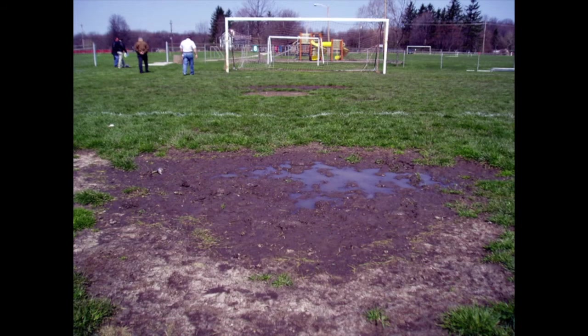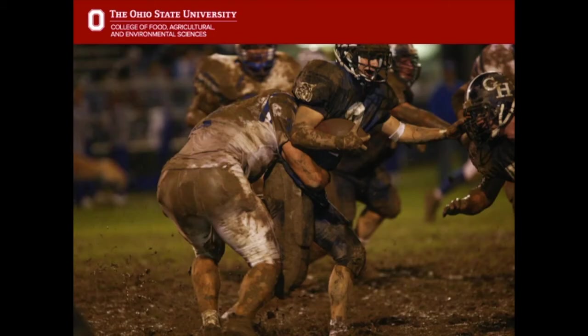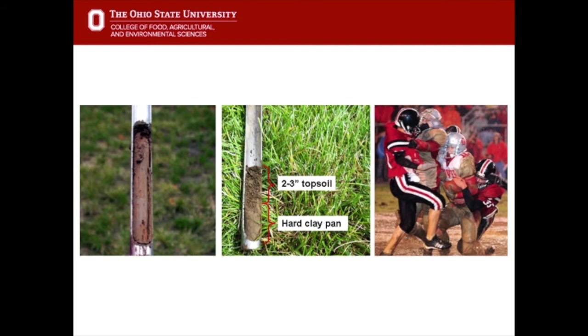In an extreme situation, if we have rain during a game, this type of scenario can happen. This is what native soil fields look like — the native soil can have silt and clay in it. There'll be two to three inches of topsoil and then a hard clay pan can form underneath where athletes have been pressing down on the soil particles, compacting them.